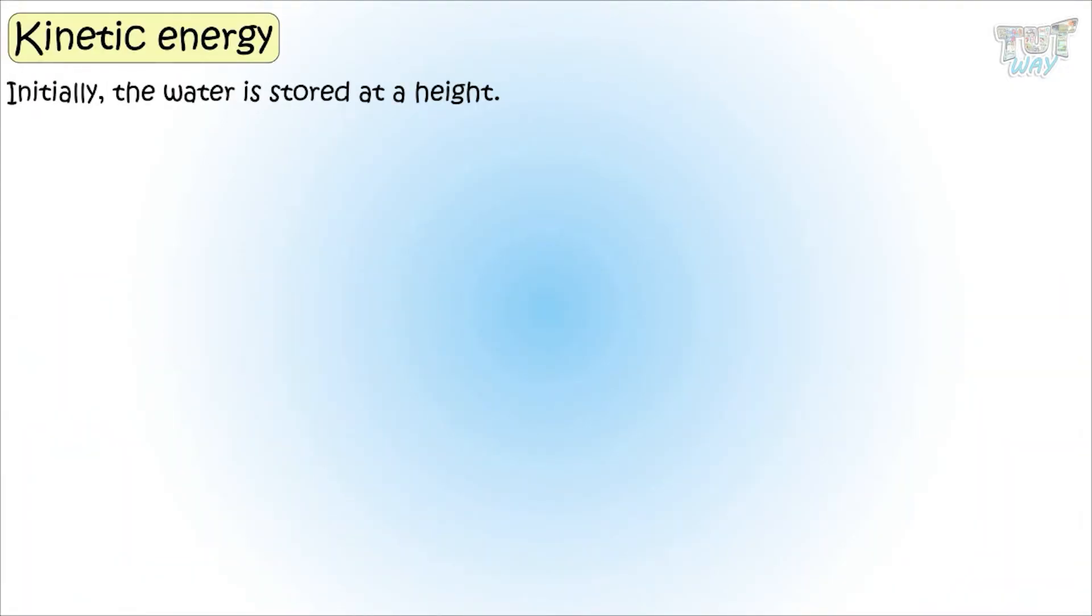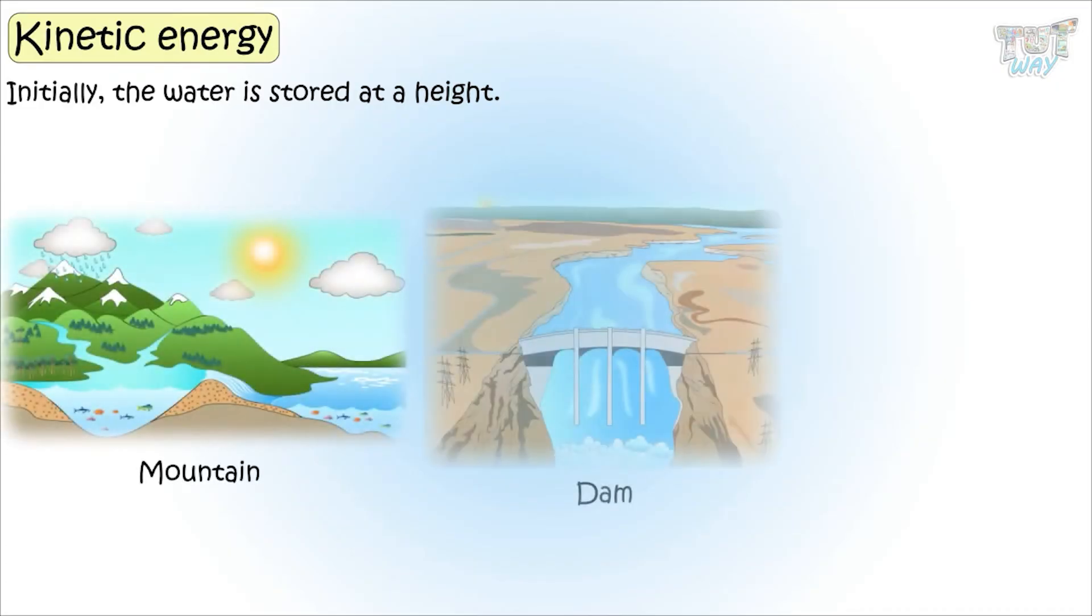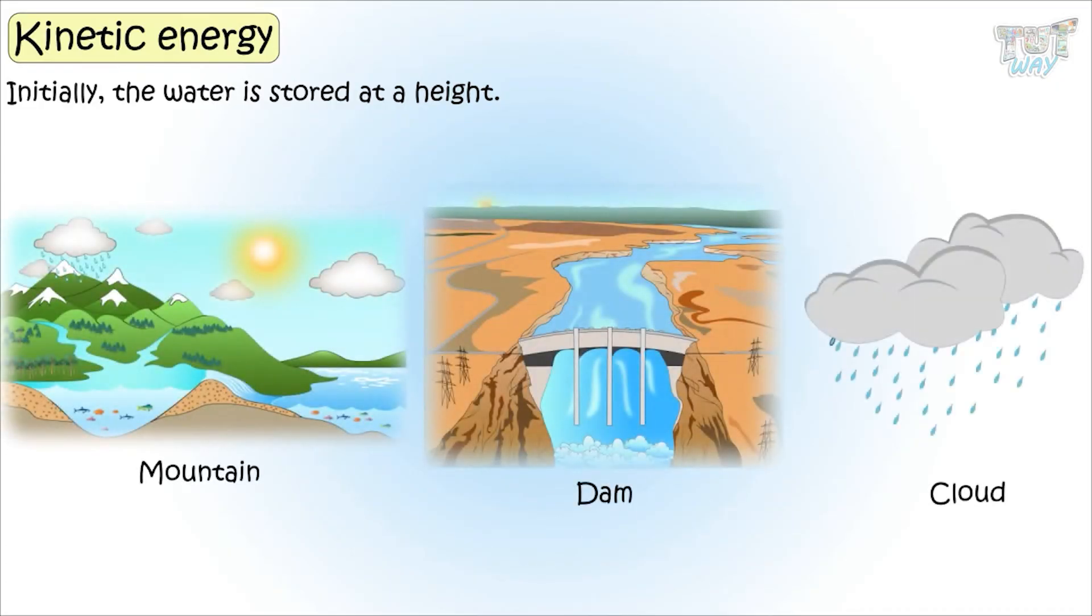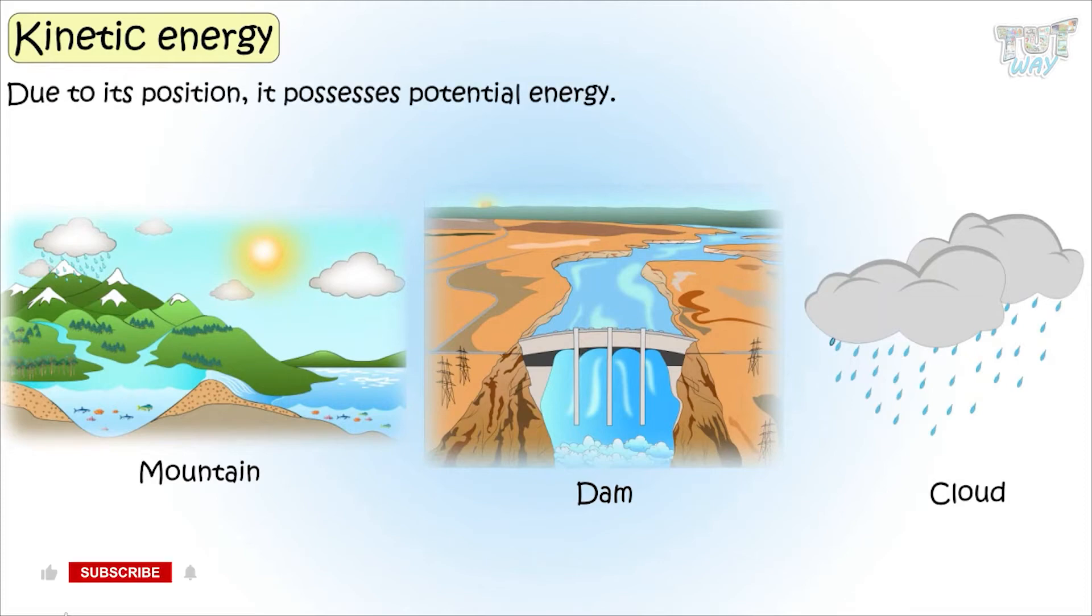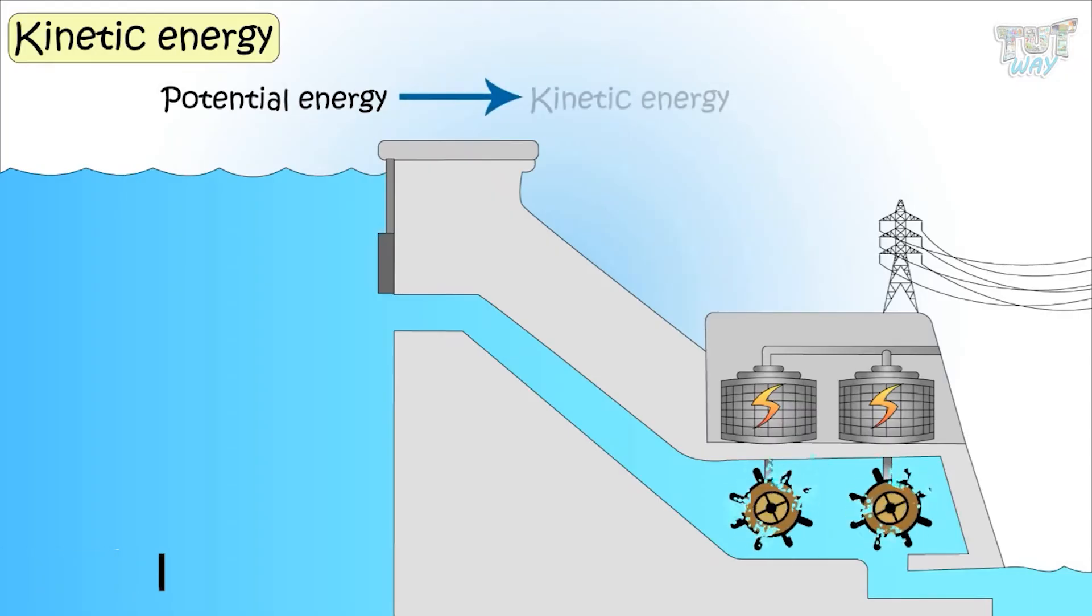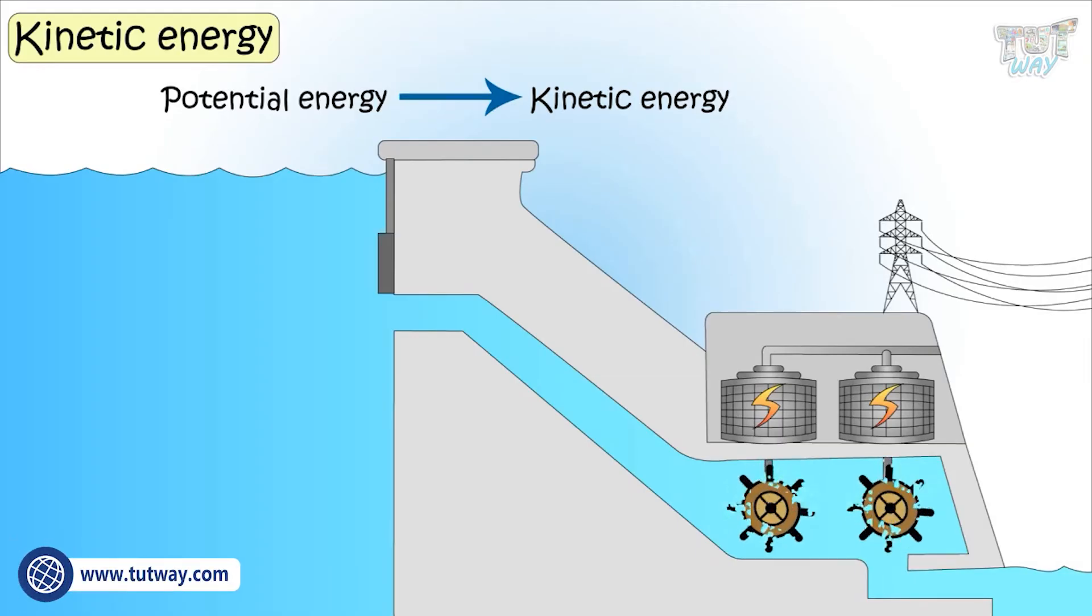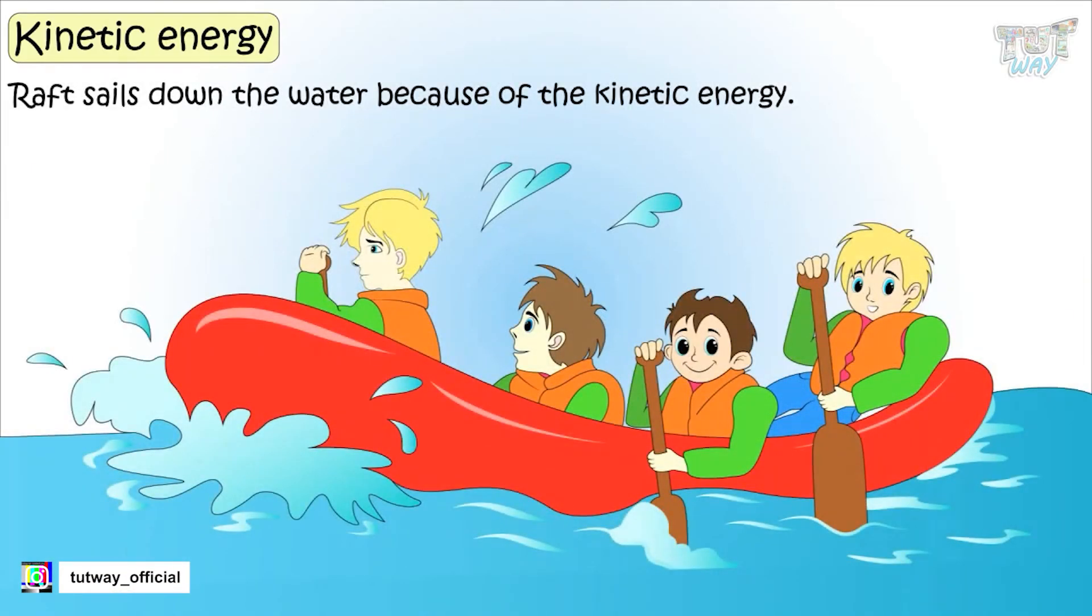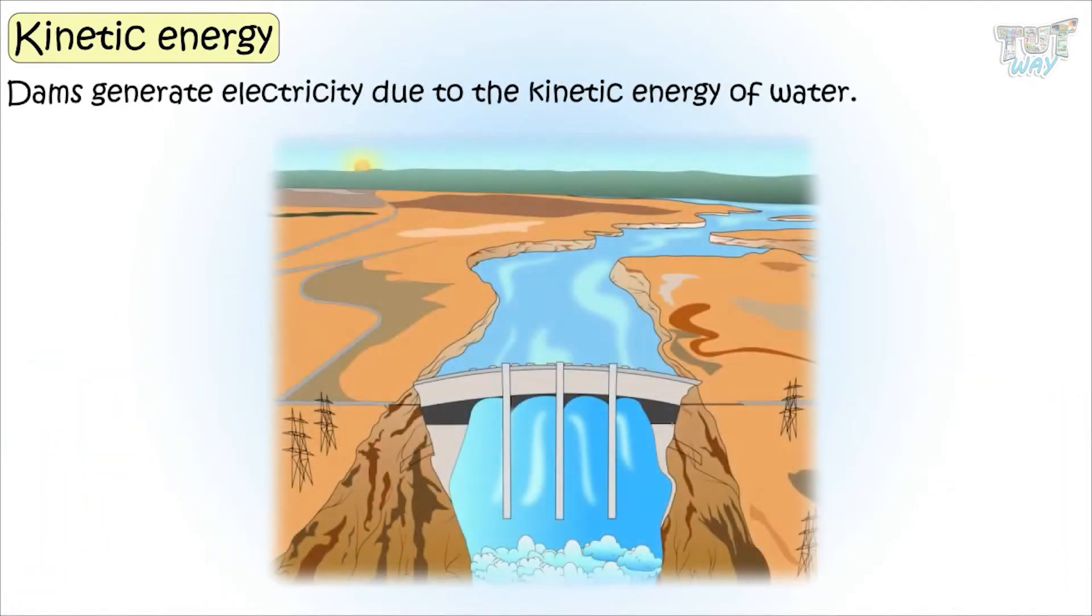Initially, the water is stored at height. It could be on the mountains or in dams, or it can be in the clouds too. Due to its position, it possesses potential energy. And when it is released from that position, its potential energy is converted to kinetic energy and gives motion to the water. The kinetic energy of this water can be used to do a lot of work. Rafts sail down the water due to kinetic energy. Dams generate electricity due to the kinetic energy of water.